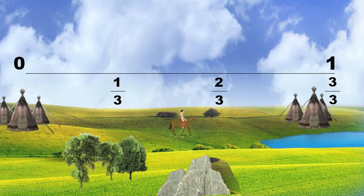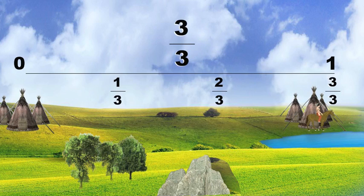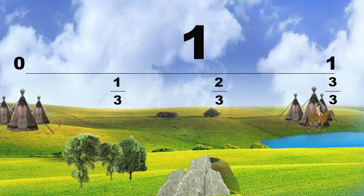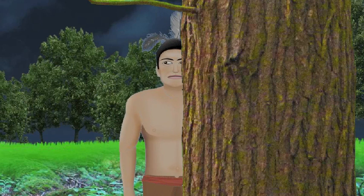The second day, you would have ridden 2 thirds of the way to the camp. When you have traveled 3 thirds of the way to the next camp — that is, when you have traveled 3 out of the 3 days between the two camps — then you have made one whole trip. 3 thirds equals 1. It's the law. There's no hiding from it.